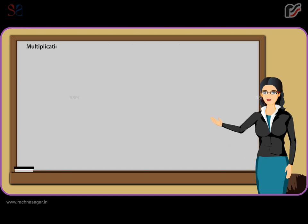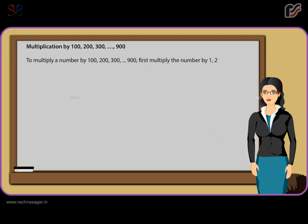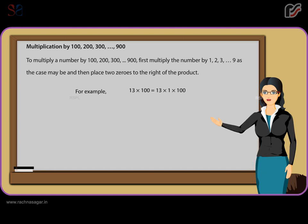Multiplication by 100, 200, 300, 900. To multiply a number by 100, 200, 300 or 900, first multiply the number by 1, 2, 3 or 9 as the case may be, and then place two zeros to the right of the product. For example, 13 x 100 is equal to 13 x 1 x 100 is equal to 1300.